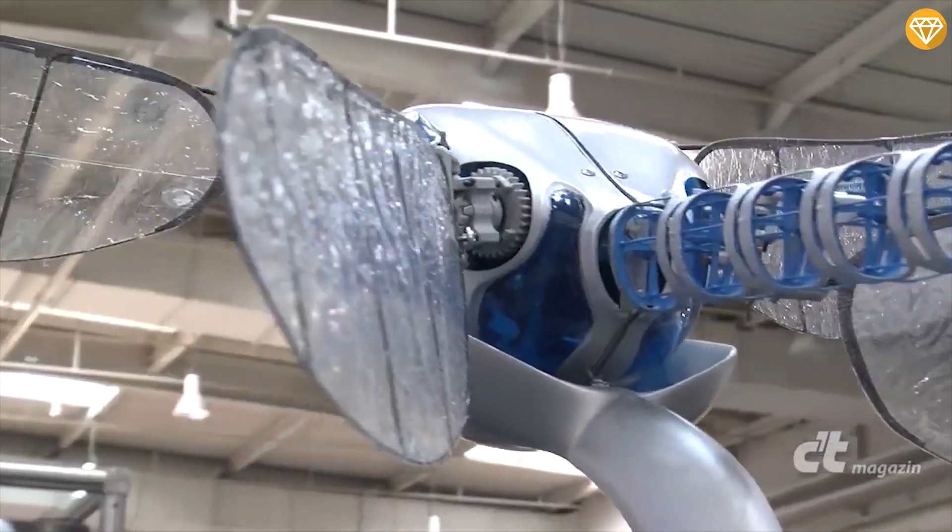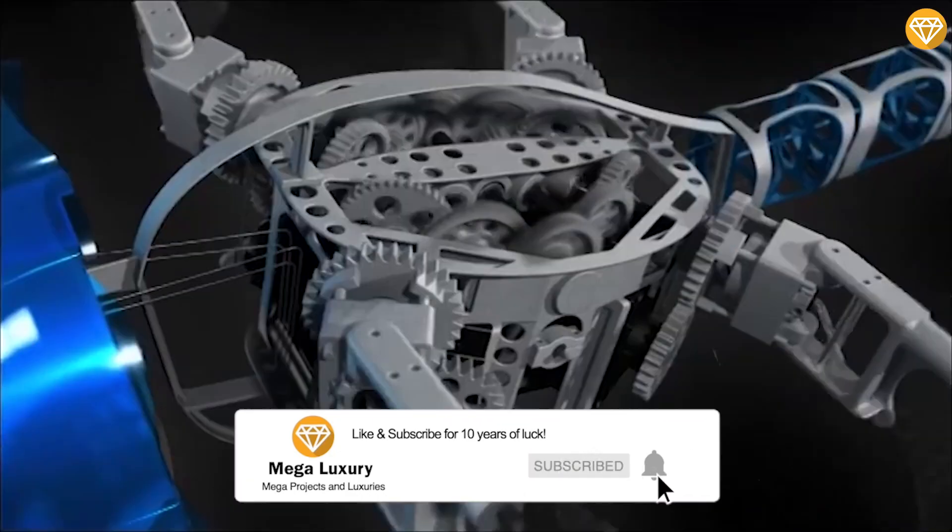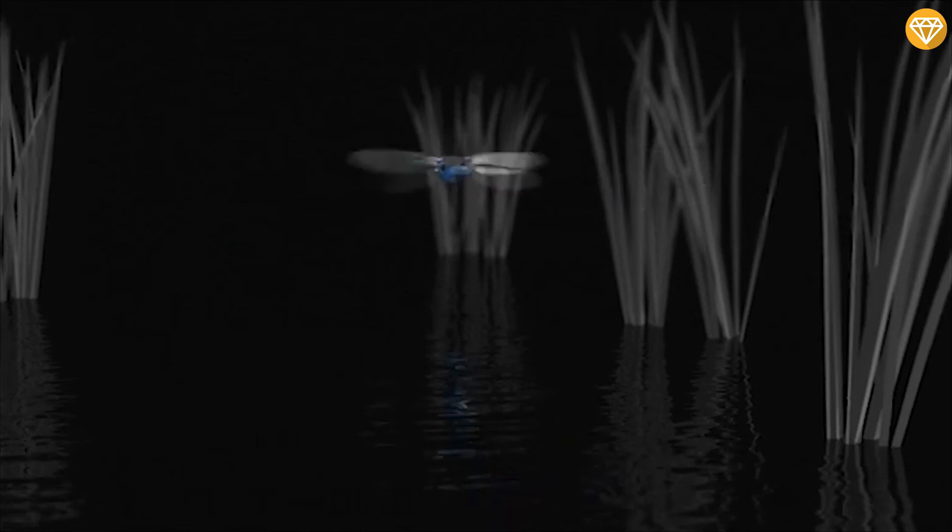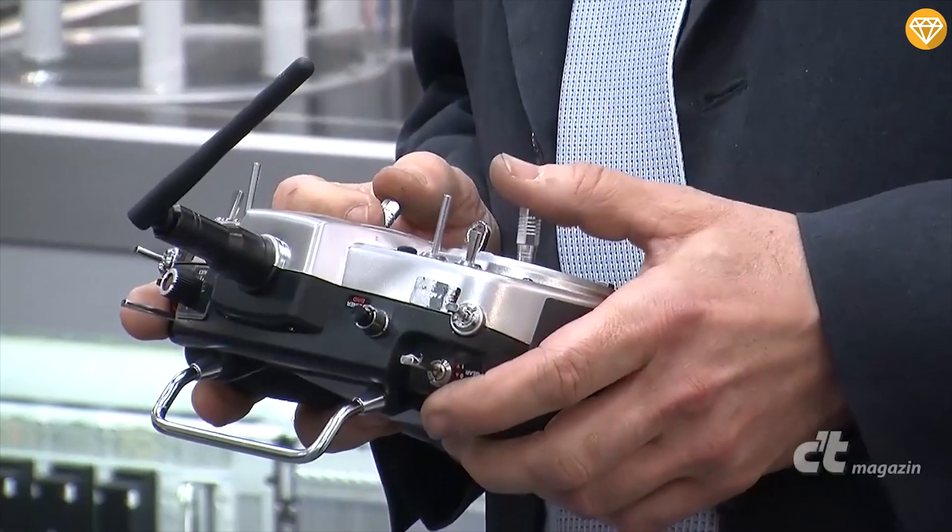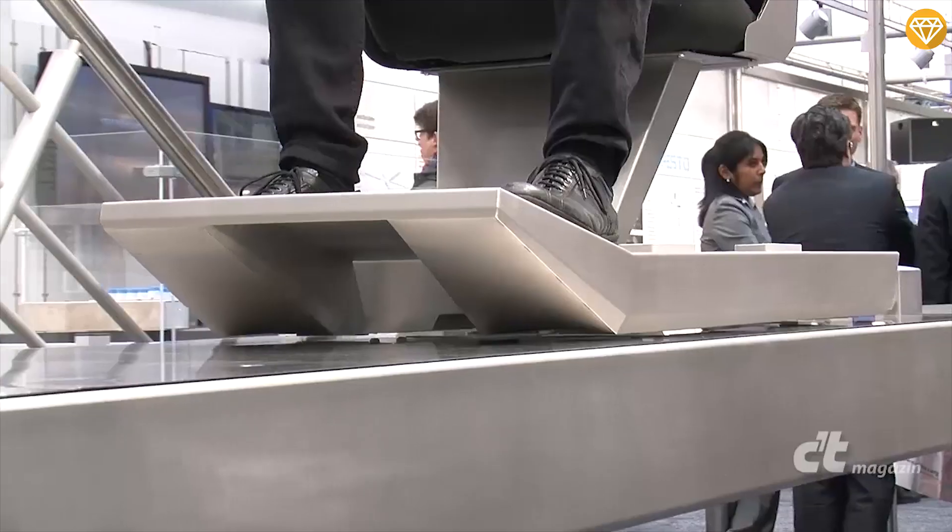Its design incorporates sensors, actuators, mechanics, control technology, and regulation systems, all integrated into a compact space. The wings are made of carbon fiber frame covered with thin foil, while the rib cage houses a battery, nine servo motors, a powerful ARM microcontroller, sensors, and radio modules.